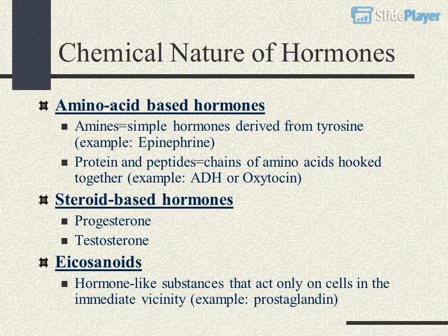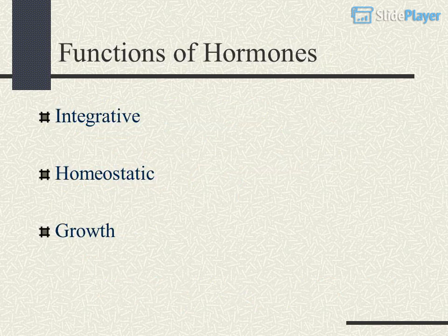Steroid-Based Hormones include progesterone and testosterone. Eicosanoids are hormone-like substances that act only on cells in the immediate vicinity, e.g., prostaglandin. Functions of hormones.